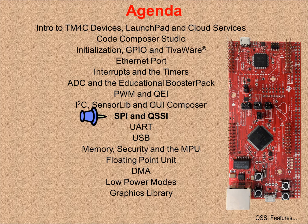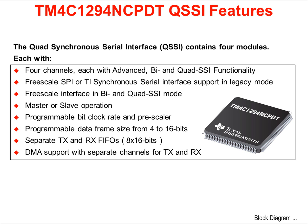In Chapter 9, we'll look more closely at the SPI port on the QSSI module. The QSSI, or Quad Synchronous Serial Interface, contains four independent modules. Each module contains four channels, each with advanced BI and Quad SSI functionality. Freescale SPI, or TI Synchronous Serial Interface Standards, are supported in Legacy mode. Freescale Interface is supported in BI and Quad SSI modes.